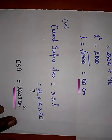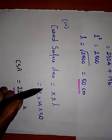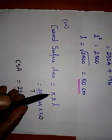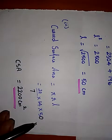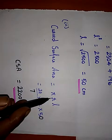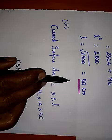The last part is to find the curved surface area. Curved surface area = π r L. Pi value is 22/7, radius is 14, and slant height is 50.